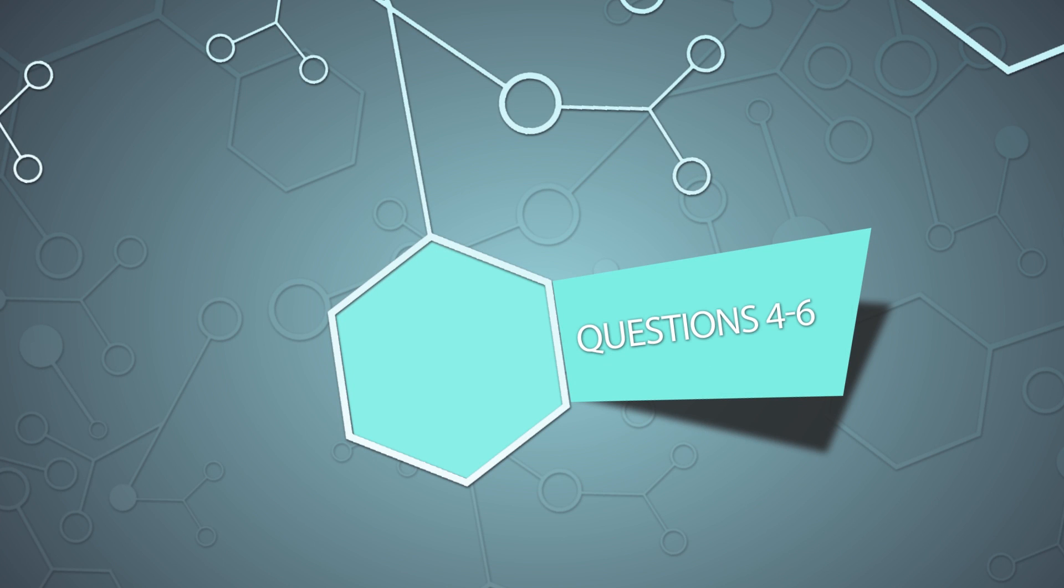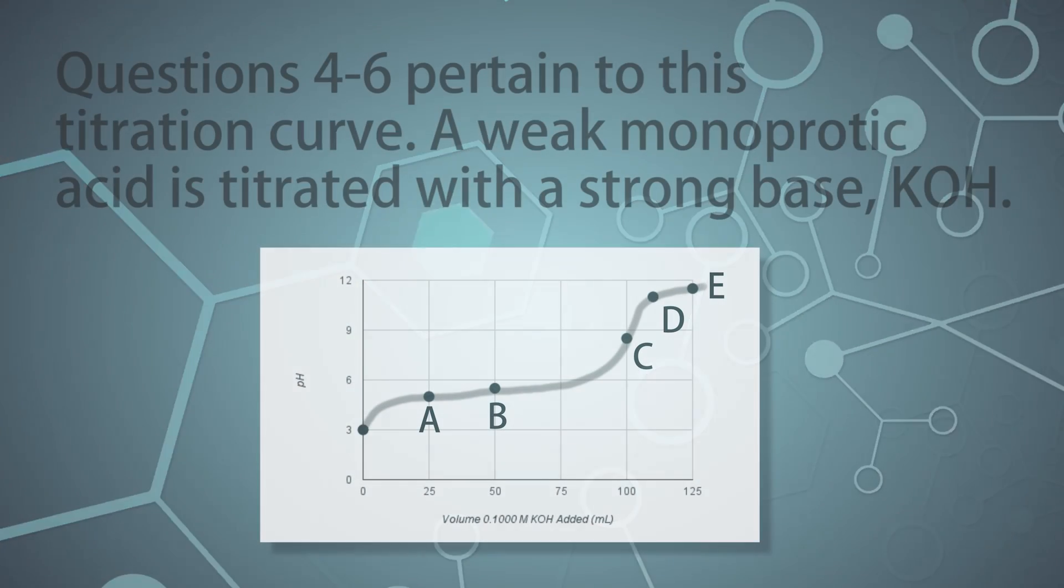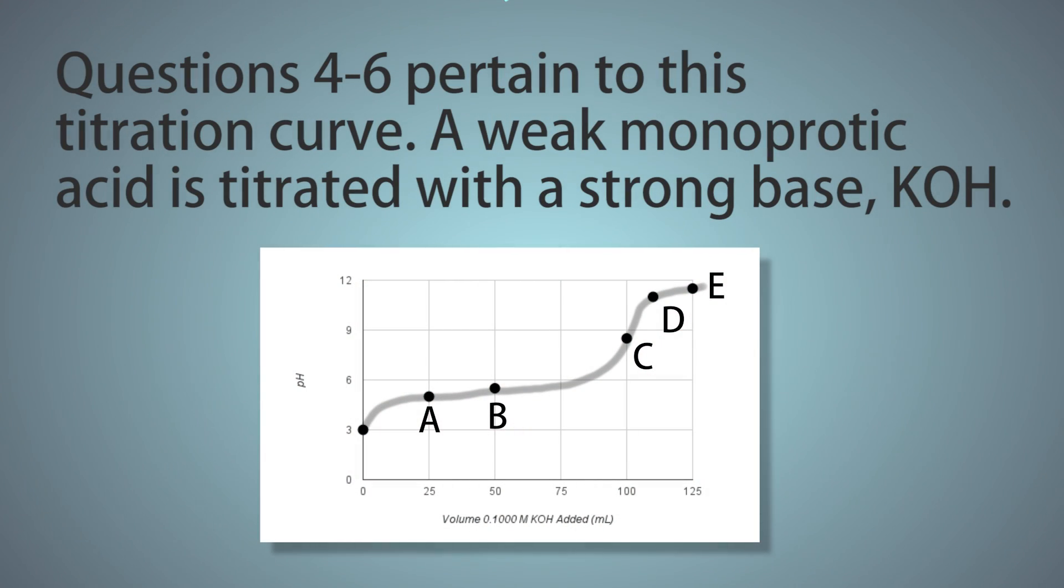Questions 4 through 6 pertain to this titration curve. A weak monoprotic acid is titrated with a strong base, KOH.